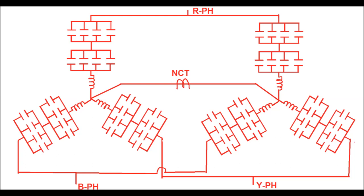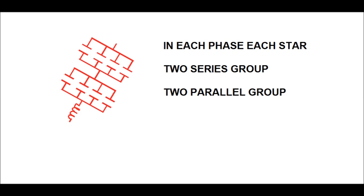Now we want to calculate the value of each capacitor unit, each having a capacitance of C. In each phase in each star, there exist two series groups, and in each series group there exist four capacitors connected in parallel.